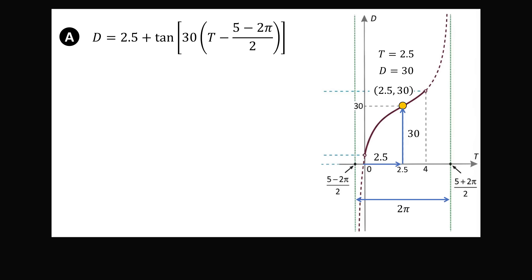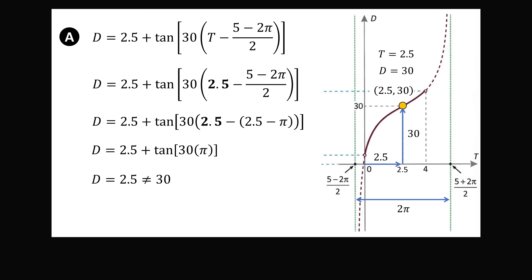So, let me illustrate this method and how you could have found the correct answer just by looking at this one point. So, let's start with option A. Let's substitute T is equal to 2.5 in this equation. Now, let's simplify this. We have 2.5 minus this fraction. So, if we divide through by 2, this fraction becomes 2.5 minus π. So, we have 2.5 minus the quantity 2.5 minus π. This will simplify to be π. We now have the tangent of 30π. Tangent of multiples of π will be equal to 0. So, this entire expression will simplify to be D is equal to 2.5 and that is not equal to 30. So, T is equal to 2.5 does not give D is equal to 30. So, you know that option A cannot represent this graph.